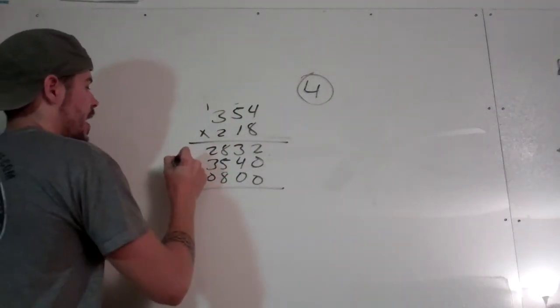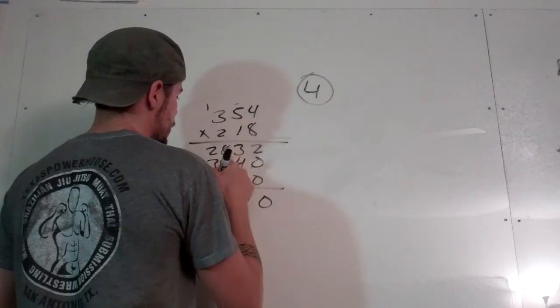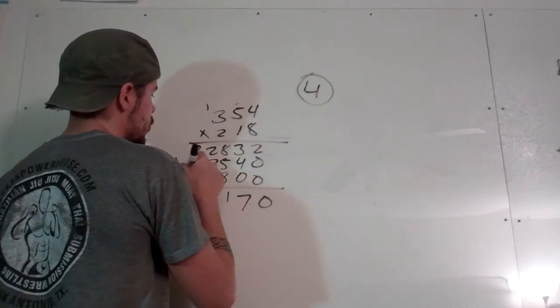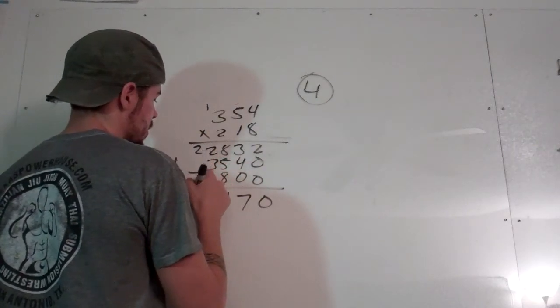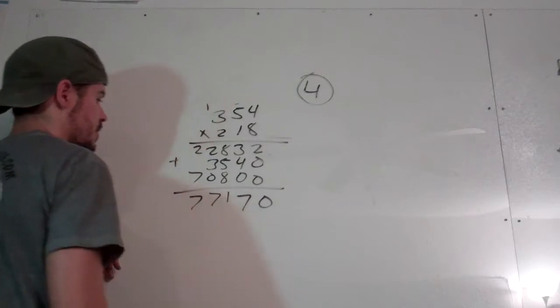Now I'm going to go ahead and add all these together. I got 0, 7, 8, plus 8 is 16, plus 5 is 21, 1, 2, 2, plus 2 is 4, plus 3 is 7. And then this is just 7 plus 0 is 7.